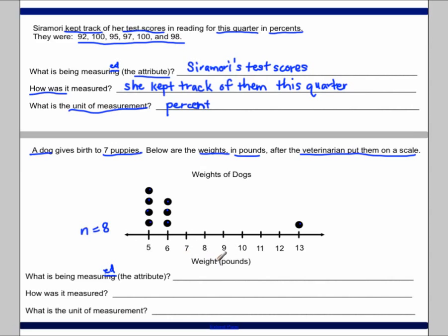So we're reading here that these are the weights of the dogs. Now, it says a dog gave birth to seven puppies, but there are eight actual weights here. So what's being measured? Well, the weight of the dogs.